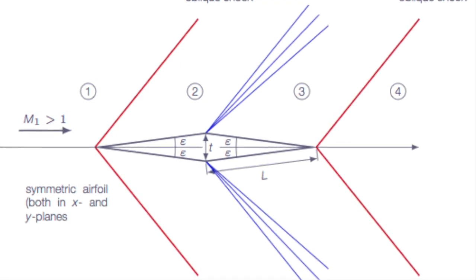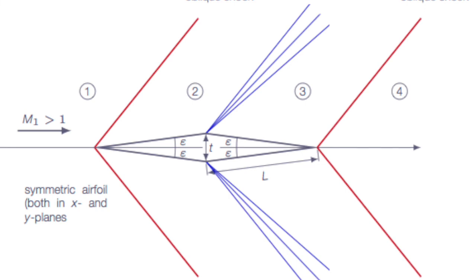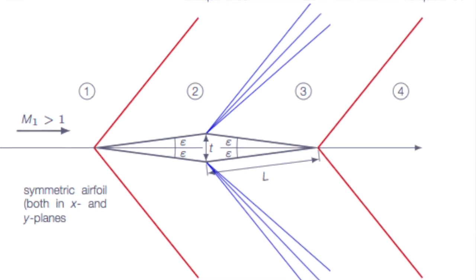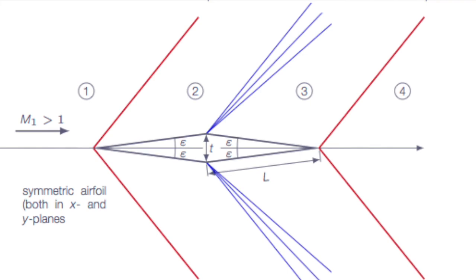At zero angle of attack, the only aerodynamic force on the diamond airfoil will be drag. The lift is zero because the pressure distribution on the top and bottom surfaces are the same.